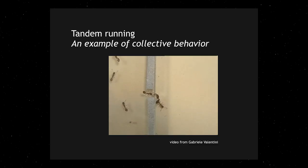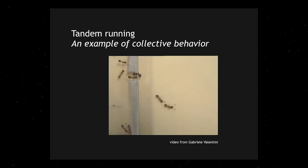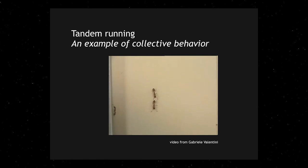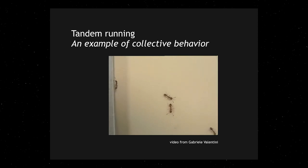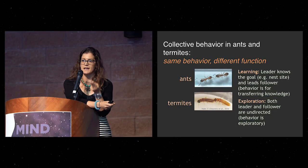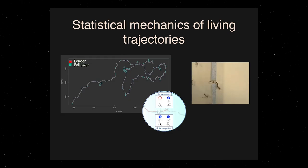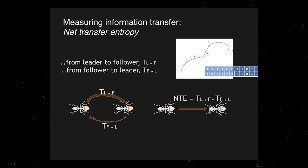We do work thinking about information across non-living and living collectives, which connects to the idea of isomorphisms. The behavior we've been looking at is ants doing a pairwise behavior where one ant follows another — this is actually goal-directed behavior where the leader ant is trying to teach the follower ant how to get to a particular nest. They engage in this pairwise behavior as a learning behavior. As it turns out, termites also have a similar pairwise behavior, but it's not goal-directed and doesn't really have a purpose. This lets us compare a system with purpose to a system without purpose very rigorously.